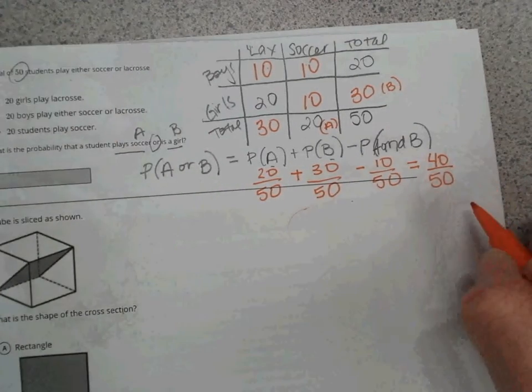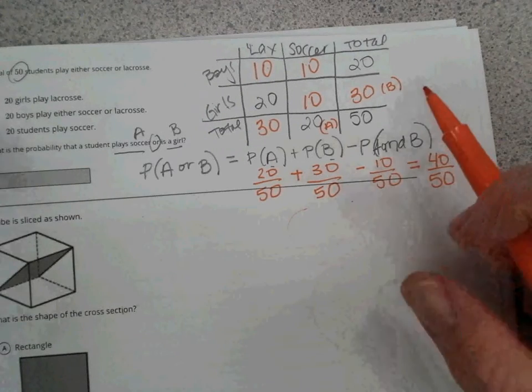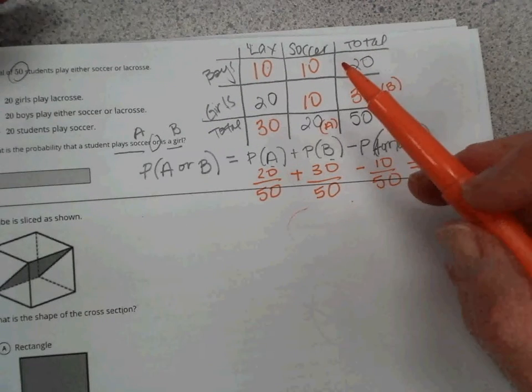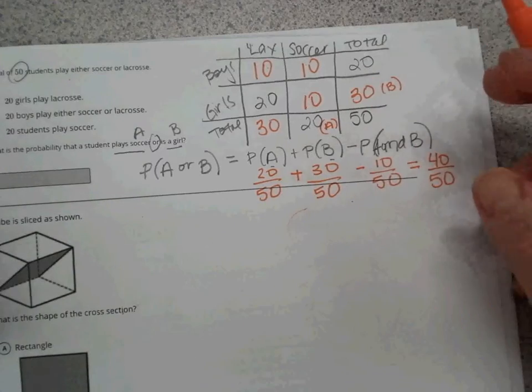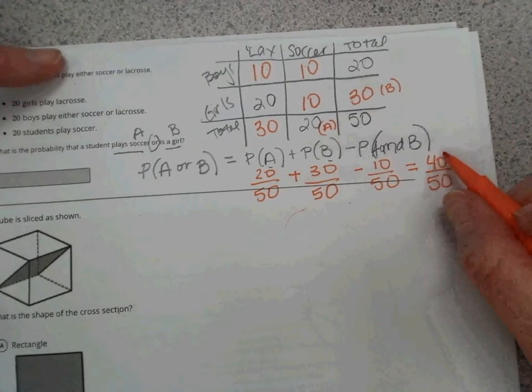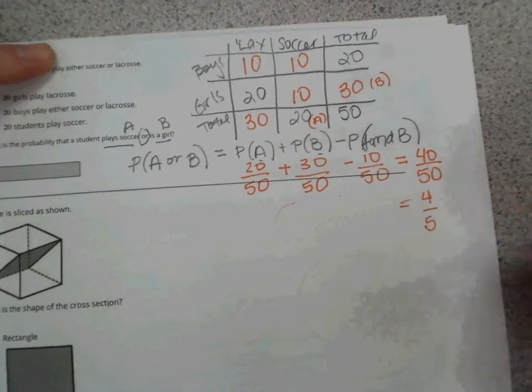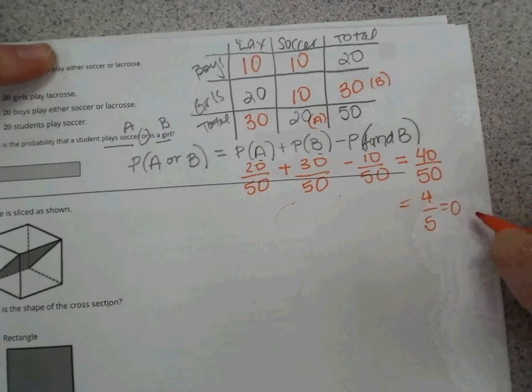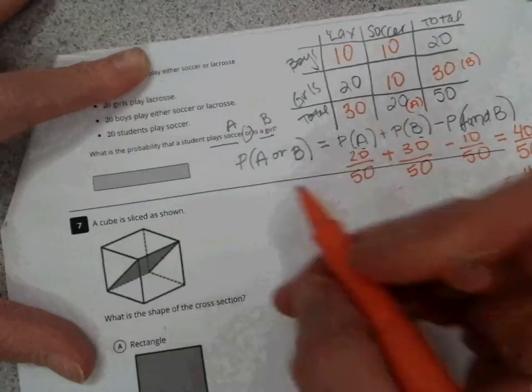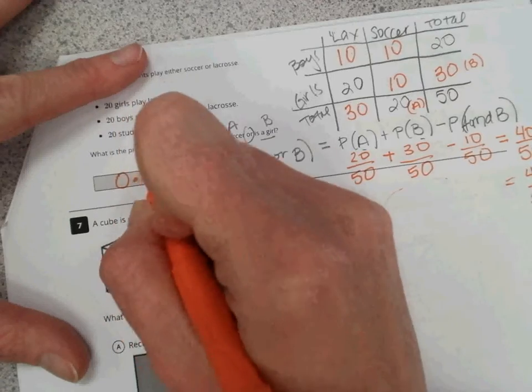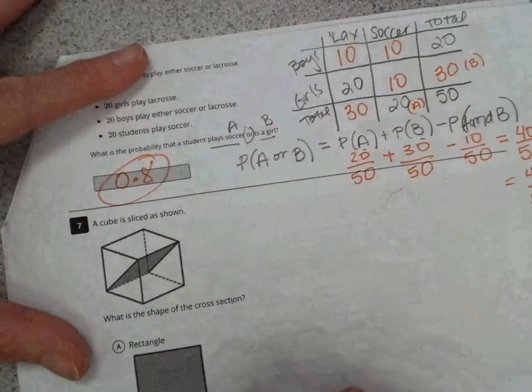So we have 40 out of 50 students are either a soccer player or a girl. We can change this into a simplified fraction and write it as 4 out of 5. We could write it as a decimal, 0.8. Either one of those would be a good answer.